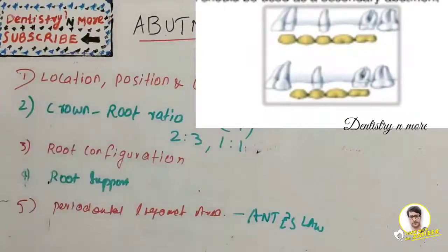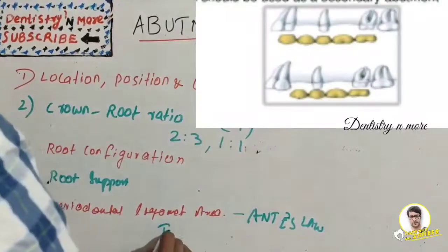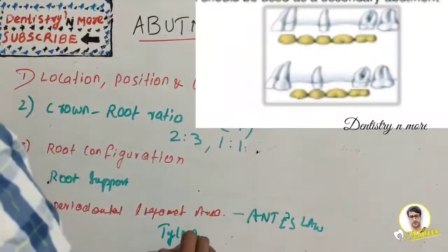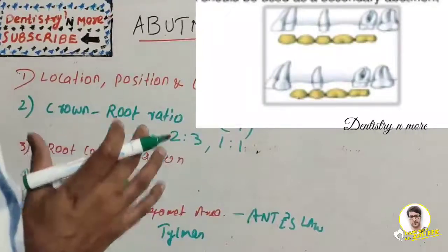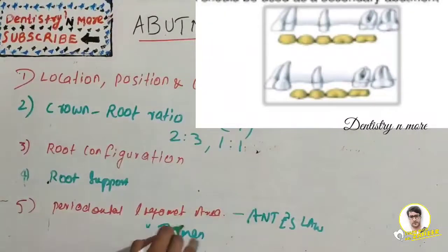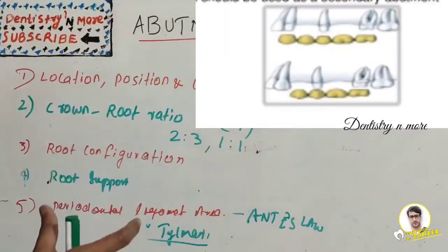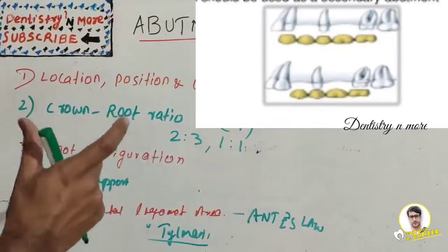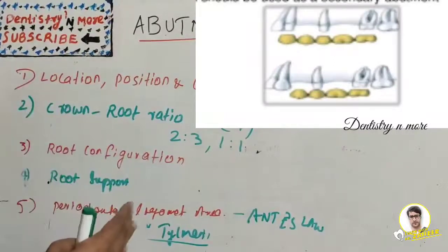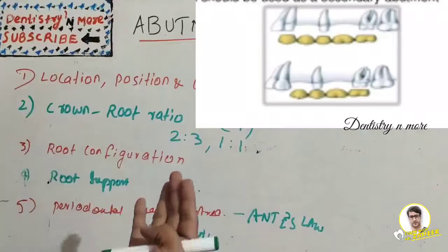Before Ante's law, there was Tillman who stated that two abutment teeth could support two pontics. Later, Ante put forward his law. He says that the sum of the periodontal areas of the abutment teeth should be equal to or greater than the teeth to be replaced.